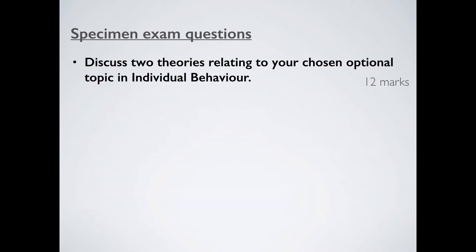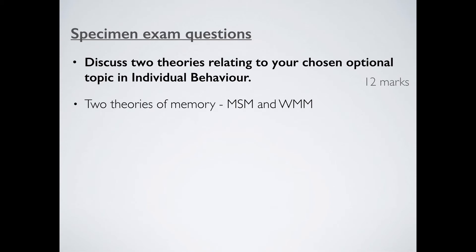Last one — a 12-marker this time, somewhere in between. 'Discuss two theories relating to your chosen optional topic in individual behaviour.' Two theories. Now, it would be very unwise here to think you can talk about schema theory — you don't know enough about it, certainly not for 12 marks. What you do know massive amounts about are the two models of memory — these are your key theories. Multistore and working memory model. If you can't write six marks on each of these, to be honest, you don't deserve to be in my psychology class.